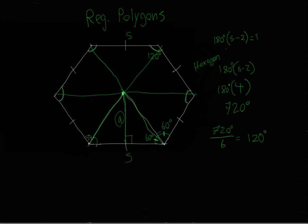That 60-degree split applies to both sides. We also have a 90-degree angle here — the apothem meets the side at a right angle. So we have 60 degrees, 90 degrees, and the last angle must be 30 degrees (since 180 degrees total in a triangle). This gives us 30-60-90 triangles.